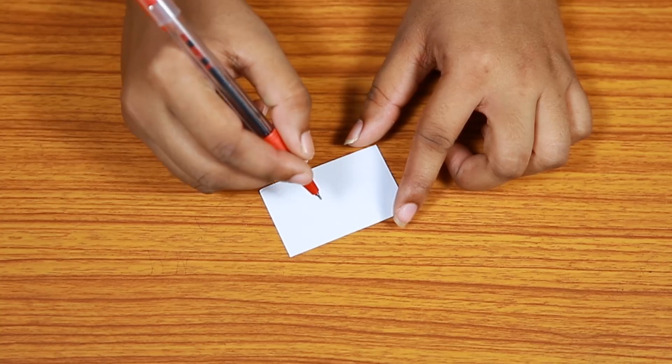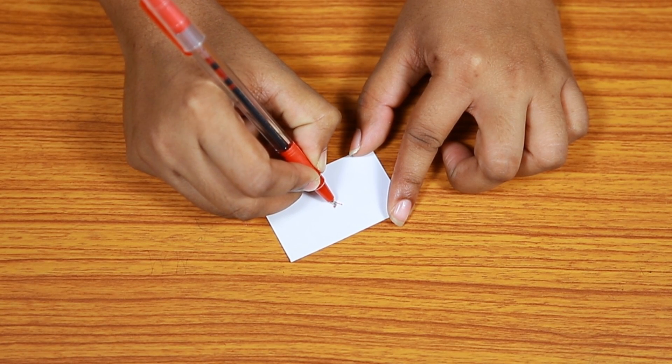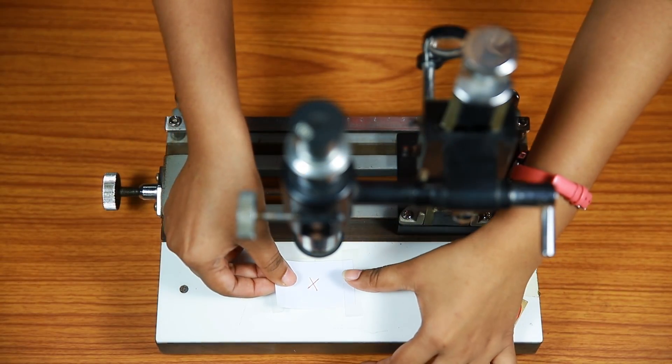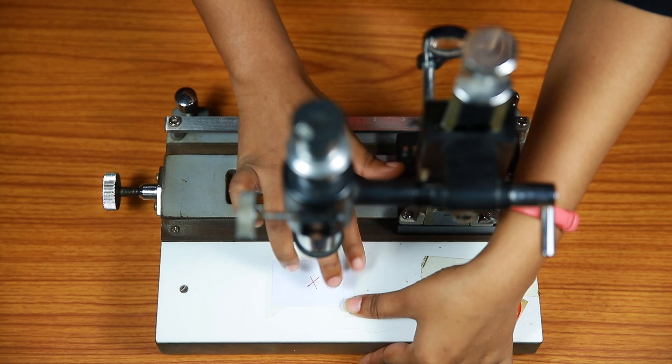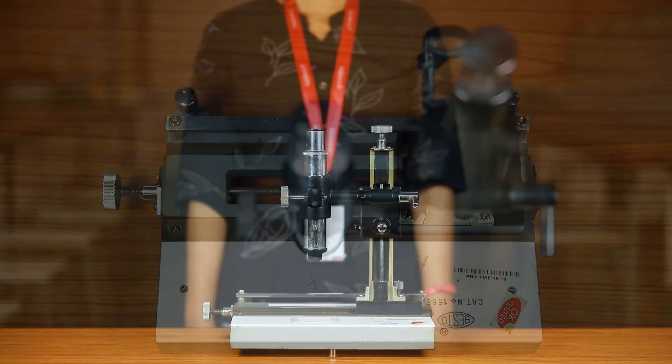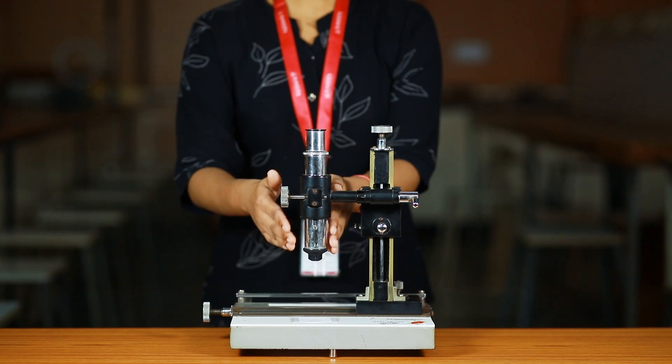Put a mark on a sheet of paper and place it on the horizontal platform of the microscope. Use an adhesive tape to stick it in place. The mark will serve as our point P. Make sure that the lens system of the microscope is vertically above the mark.